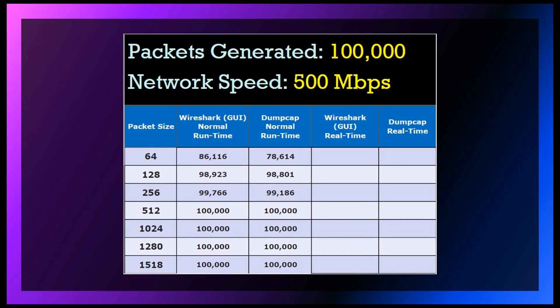For network speeds of 500 megabits per second, for 64-byte packet size, we captured 86,116 packets in Wireshark GUI. However, DumpCap captured only 78,614 packets out of 100,000.